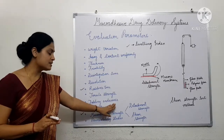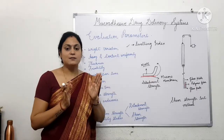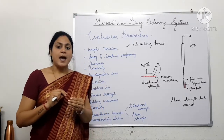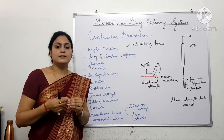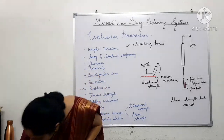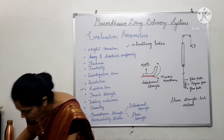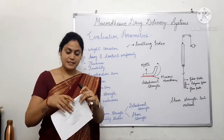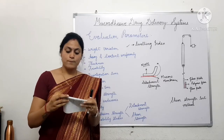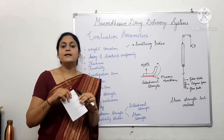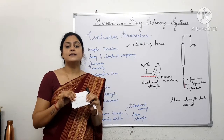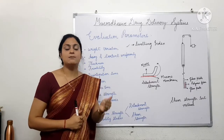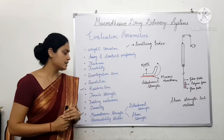In folding endurance, the patch which is formulated is taken and folded. The number of times the patch can be folded without breaking is called folding endurance. For example, if a patch is folded repeatedly, up to what number it can be folded without breaking — this is the folding endurance reading, which may be 2, 3, 4, and so on.